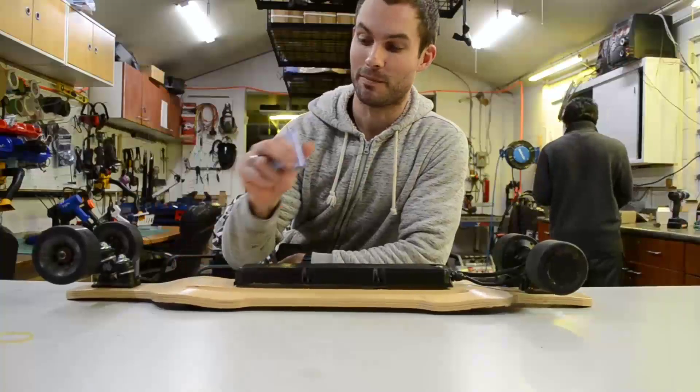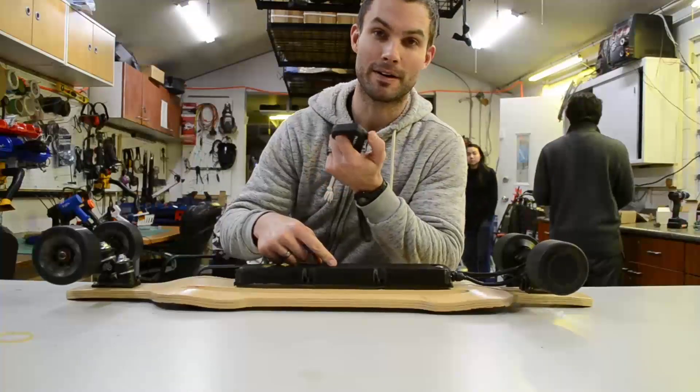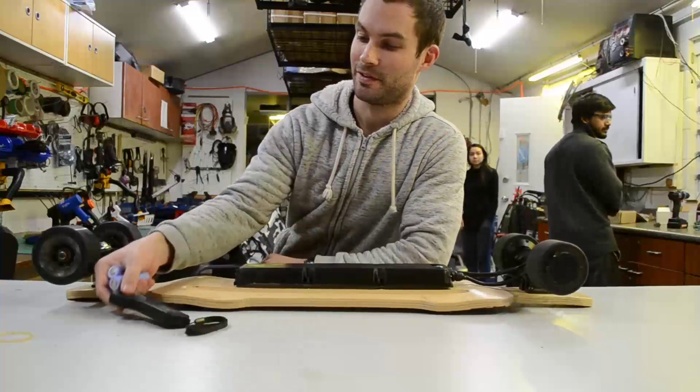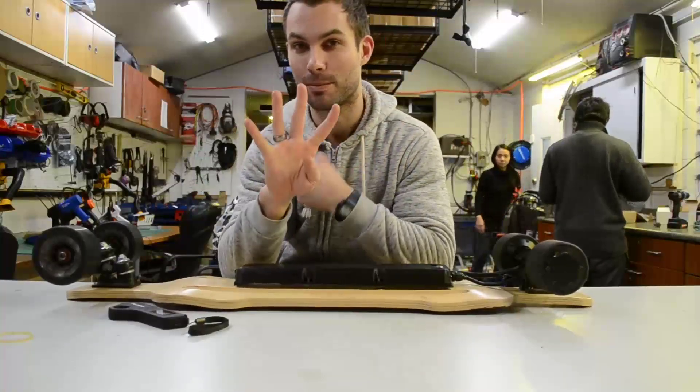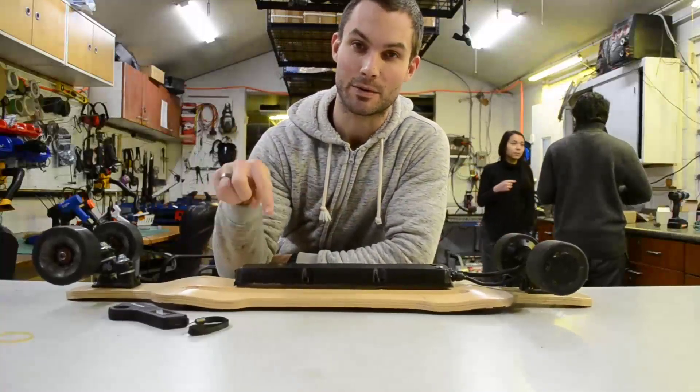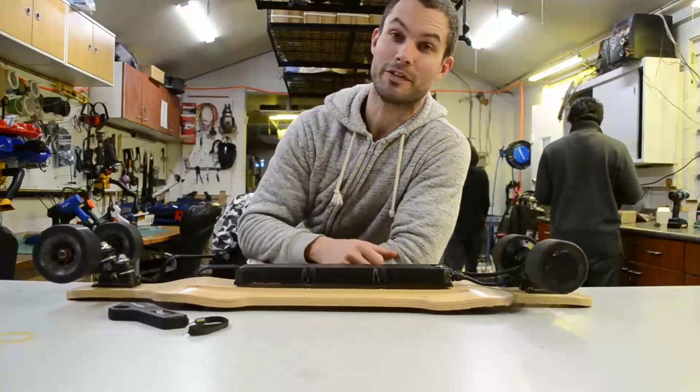Well guys, there you have it. We went from some cells to a working battery. It's able to power an electric skateboard. So it really can be as easy as that. Now remember, this is the first in a four-part series. Our next video, we're going to be doing a down tube battery for an e-bike. So make sure to subscribe. And we'll see you in the next one.